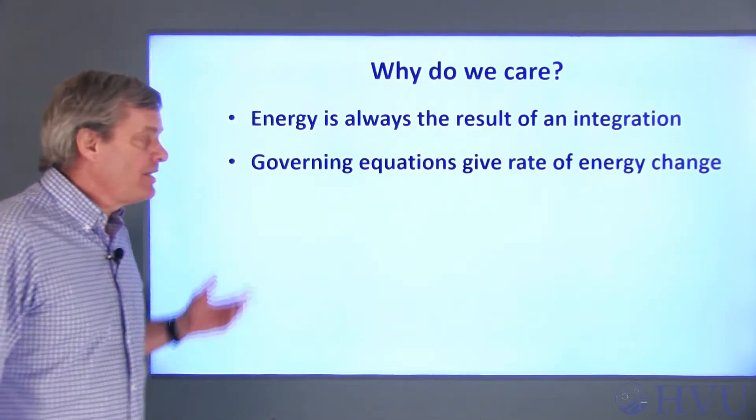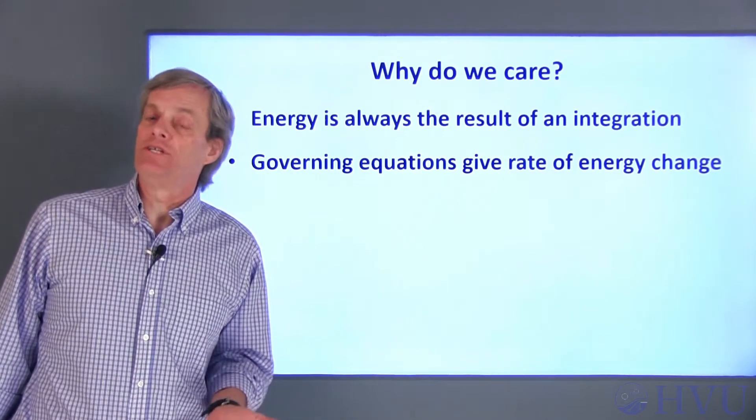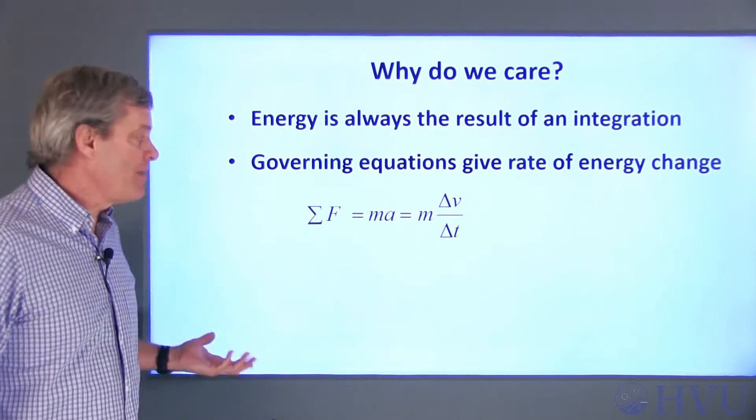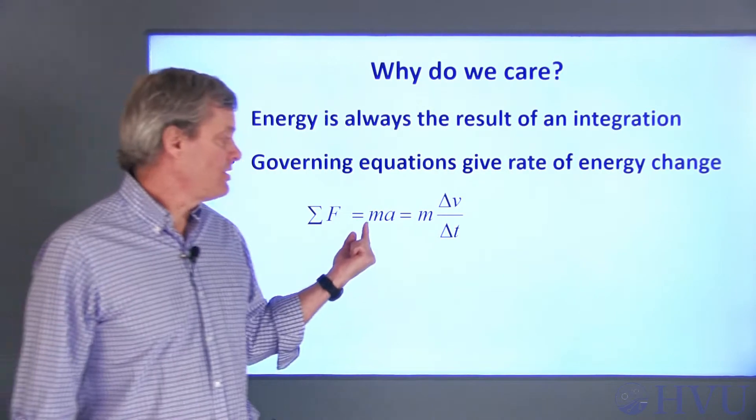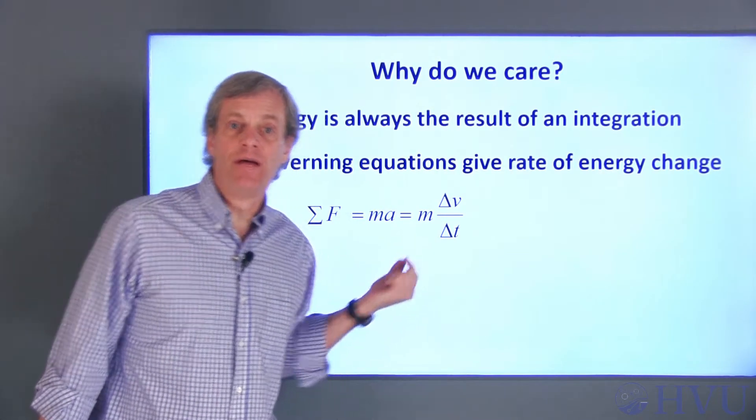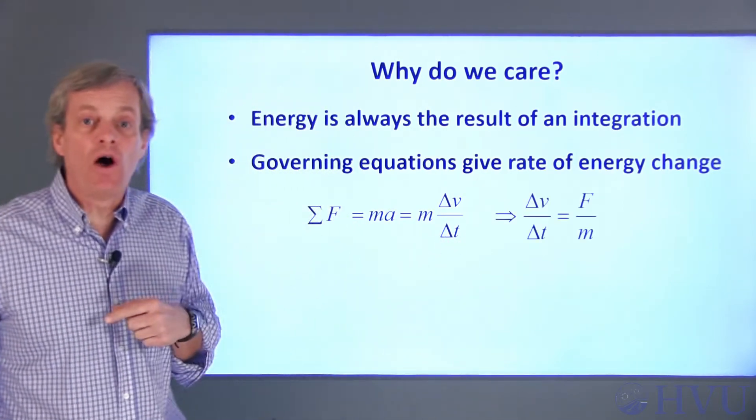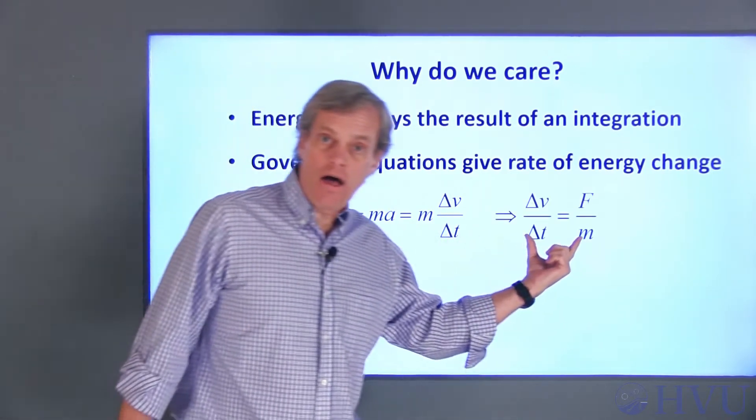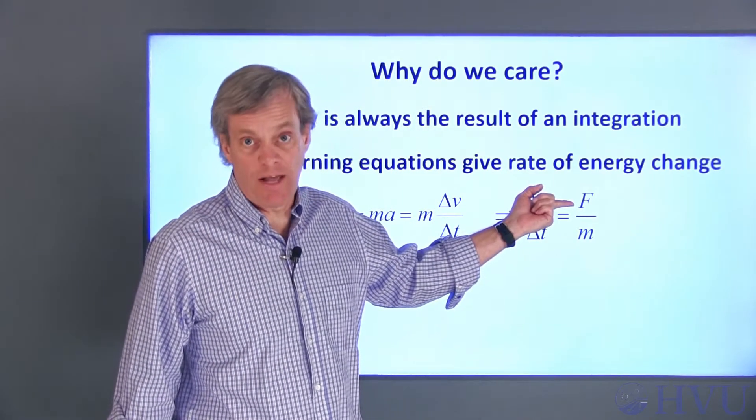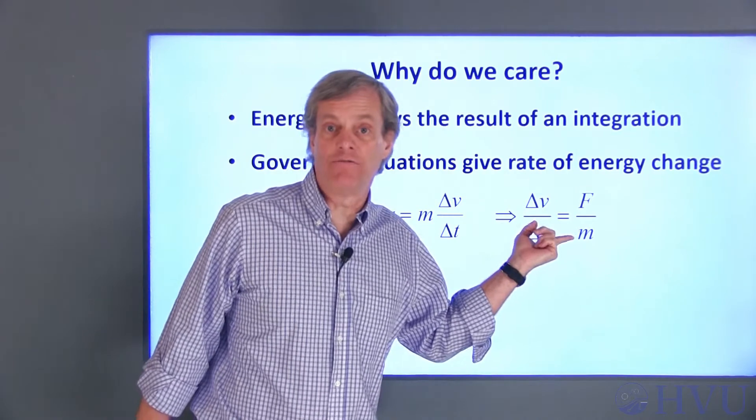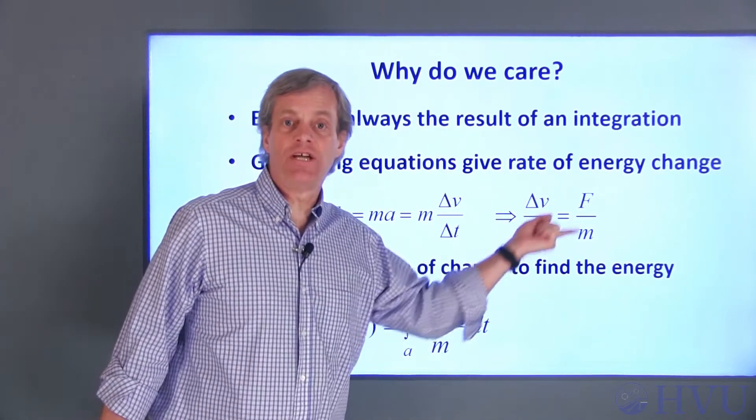The fundamental equations for dynamic engineering systems dictate the rate at which energy can change. For example, Newton's third law says that the sum of the forces applied to a mass is equal to the mass times the acceleration. Acceleration is the rate of velocity change with time. So Newton's third law governs the rate of change of the velocity of a mass. This is just the ratio of the applied force to the mass itself. To determine the energy in the mass, we need to undo this differentiation process.